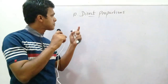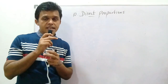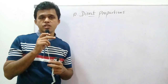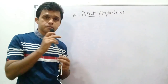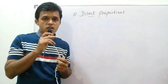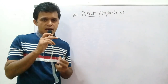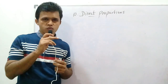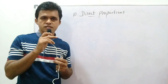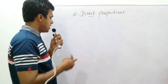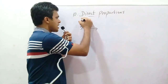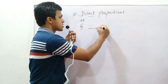This is the second part of direct proportions. I have done a video for you — this is the second video on direct proportions. Now I will teach you what a direct proportion is. In the previous video, I taught you that five mangoes can be bought for 20 rupees.